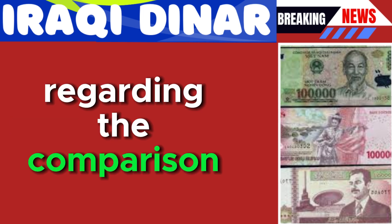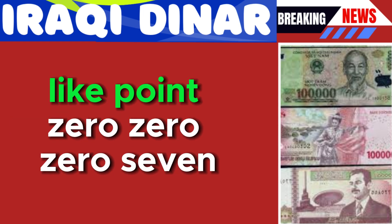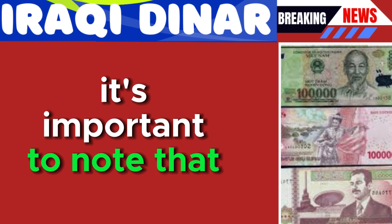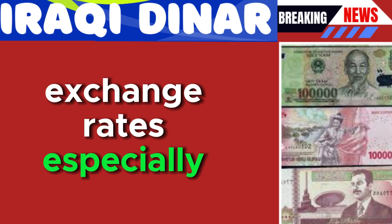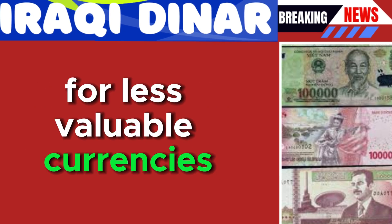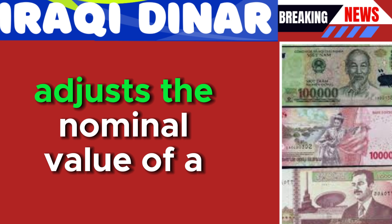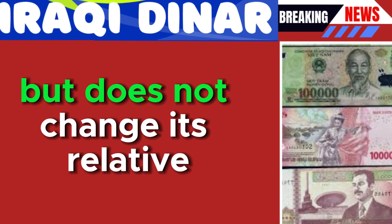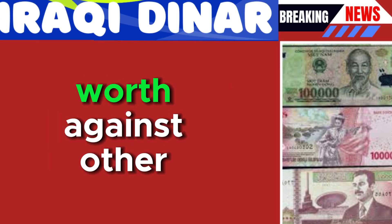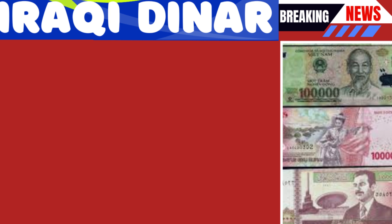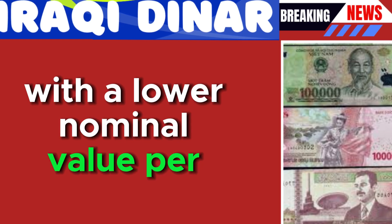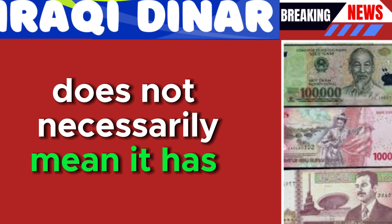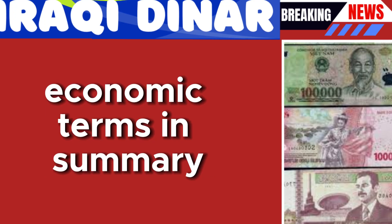Regarding the comparison to fractions of a dollar, like 0.0007, it's important to note that these fractional values are common in international exchange rates, especially for less valuable currencies. Redenomination adjusts the nominal value of a currency but does not change its relative worth against other currencies. Thus, a redenominated currency with a lower nominal value per unit does not necessarily mean it has less value in real economic terms.